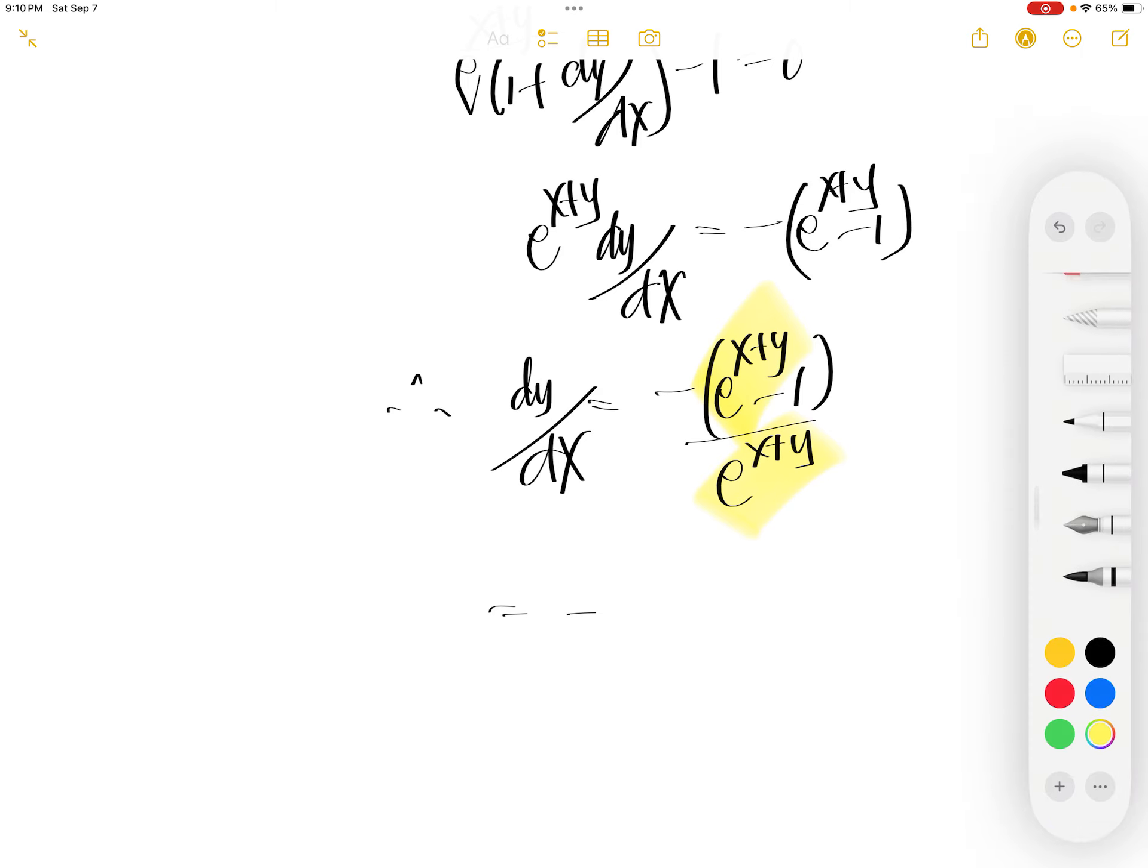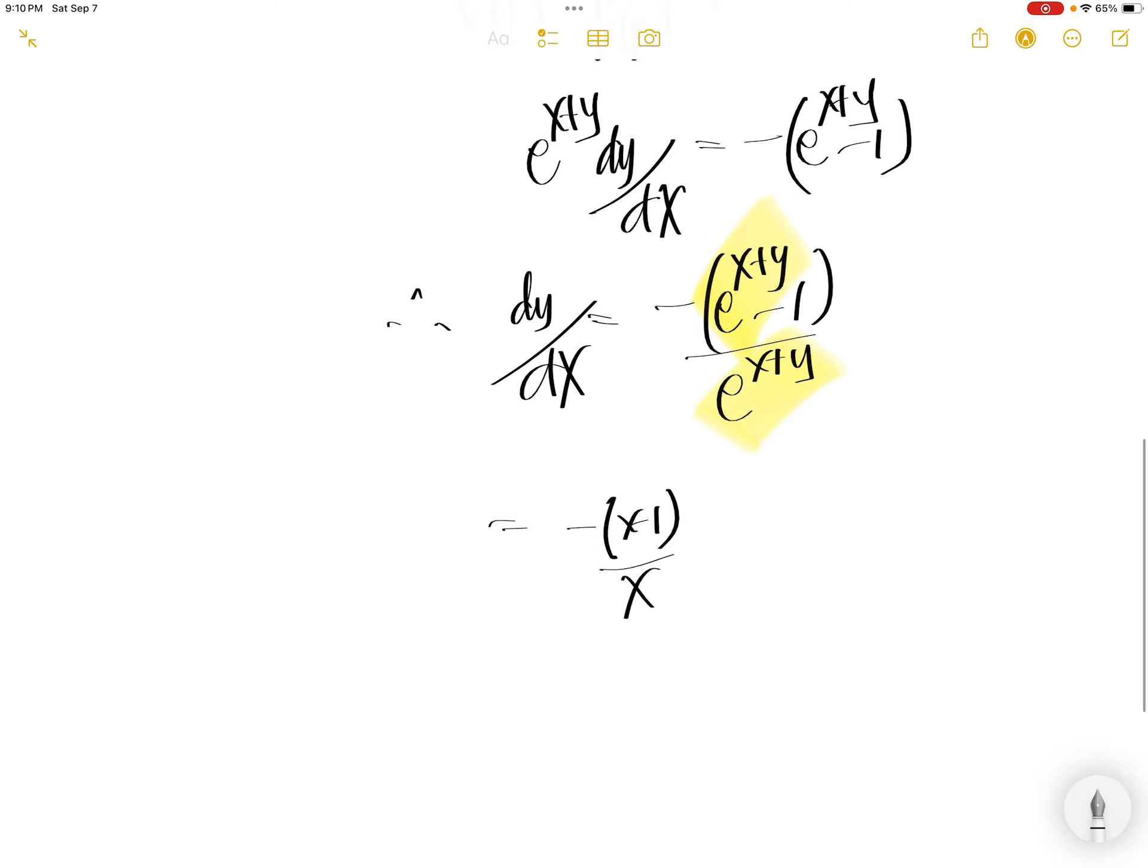So you have x minus 1 divided by x. Distribute the negative in, so you get 1 minus x over x, which is what you're supposed to show for dy/dx.